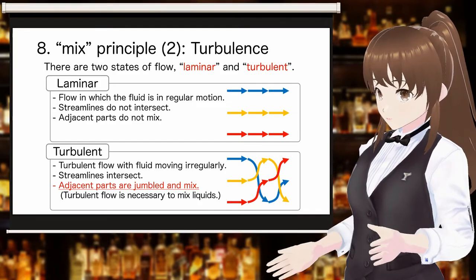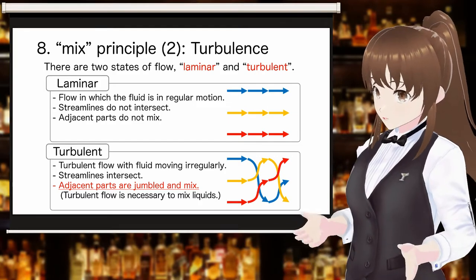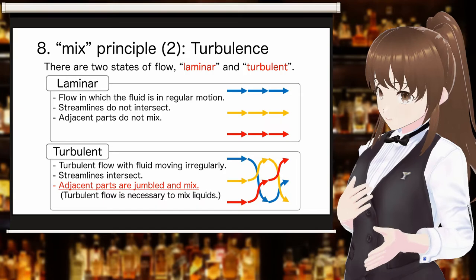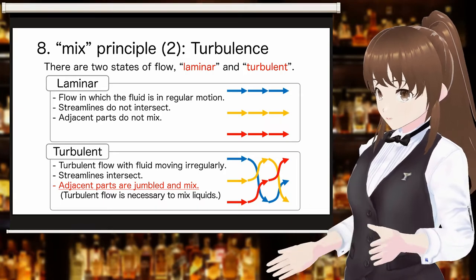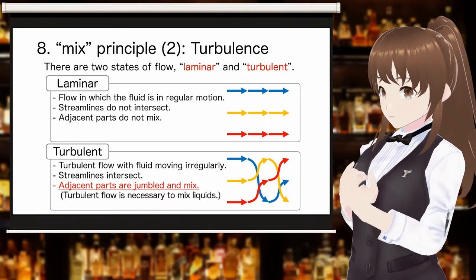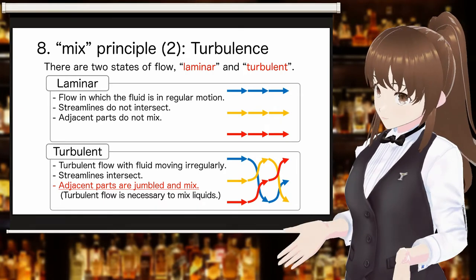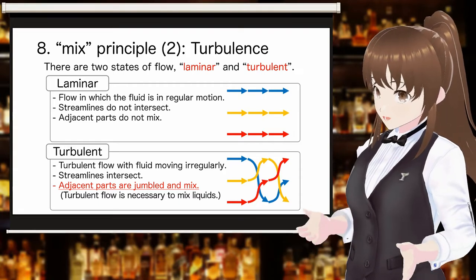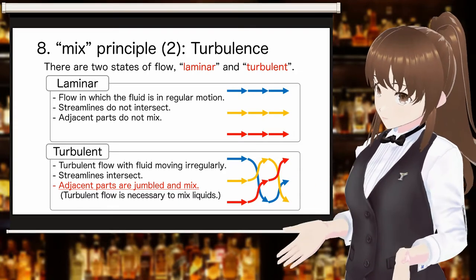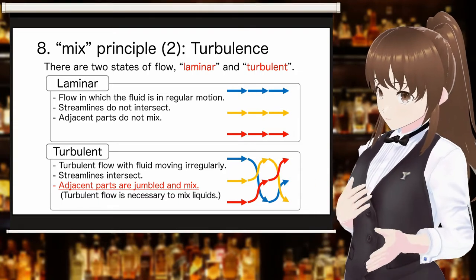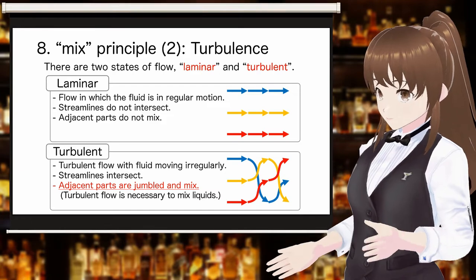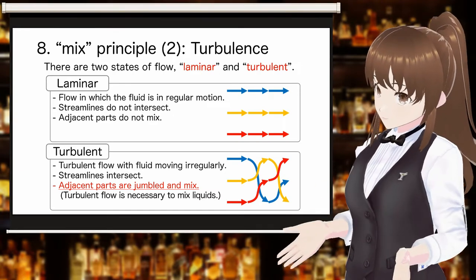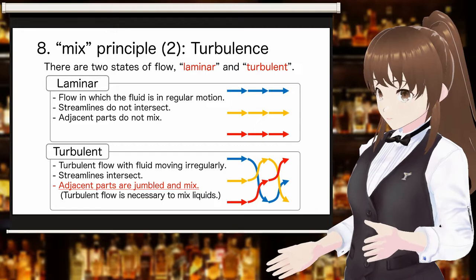In fact, there are two states of flow: laminar and turbulent. Laminar is a flow in which the fluid is in regular motion, while turbulent is a troubled flow in which the fluid is in irregular motion. In order to mix liquids, a state of turbulence is necessary, in which adjacent parts mix together due to irregular motion.